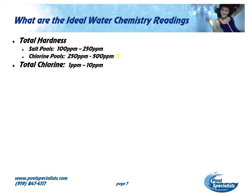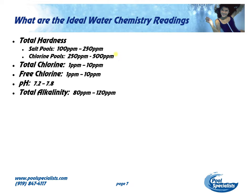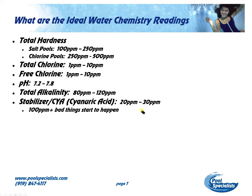Your total chlorine — you want it between 1 and 10 parts per million. A number of states say five parts per million. pH, you're going to want 7.2 to 7.8. Total alkalinity, you're going to want from 80 to 120. Your stabilizer needs to be 20 to 30 parts per million — this is inaccurate on the bottle. At 100 parts per million, bad things start to happen, and as it goes up, even worse things start to happen.